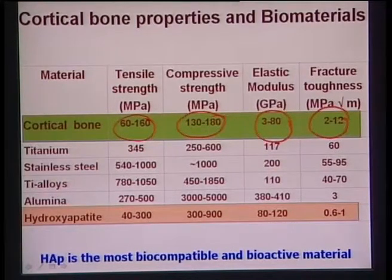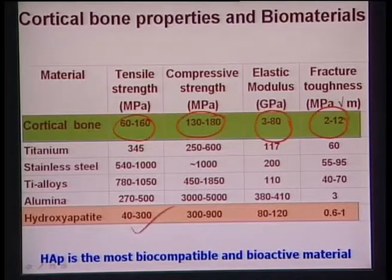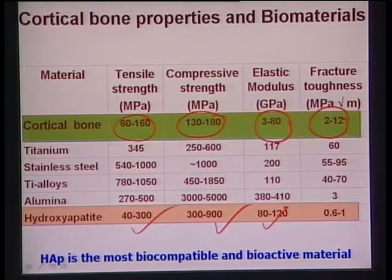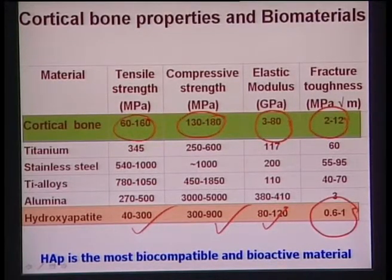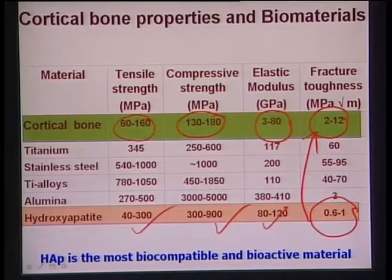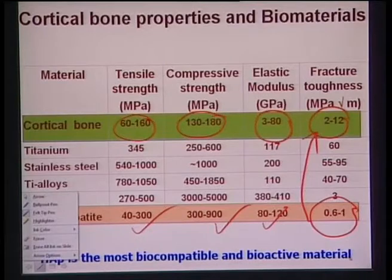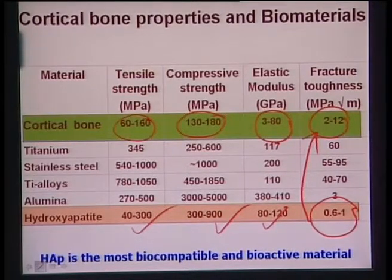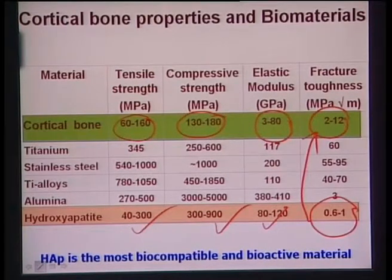Comparing cortical bone properties with hydroxyapatite: tensile strength, compressive strength, and elastic modulus of hydroxyapatite match or are even higher than cortical bone. However, the fracture toughness of hydroxyapatite does not even reach the lower bound of cortical bone fracture toughness. Hydroxyapatite is emphasized because it is the major inorganic component of natural bone, and although it has good biological properties, it lacks certain physical properties — which is why it cannot be used as a bulk implant for several bone replacement applications.